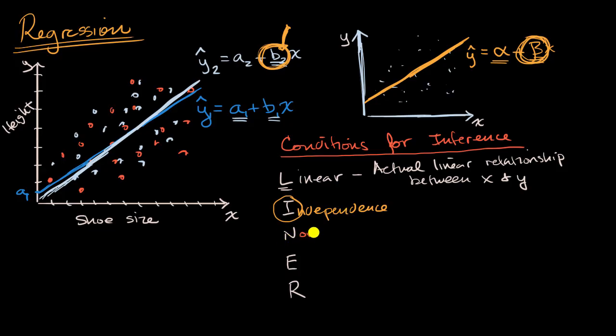Now, the next one is the normal condition, which we have talked about when we were doing inference for proportions and for means, although it means something a little bit more sophisticated when we're dealing with a regression. The normal condition, and once again,